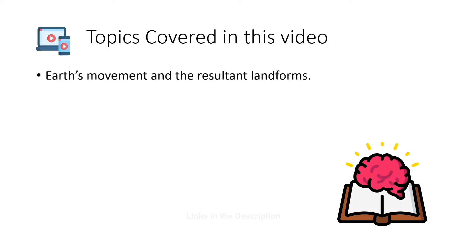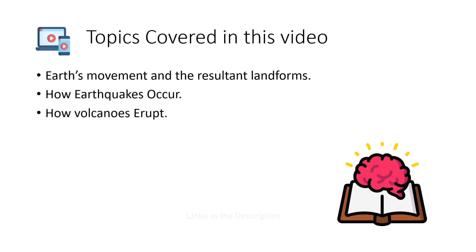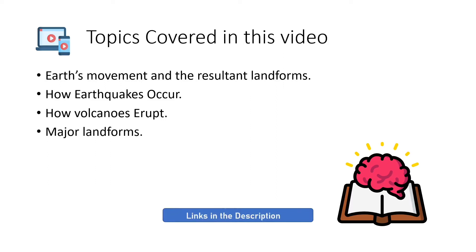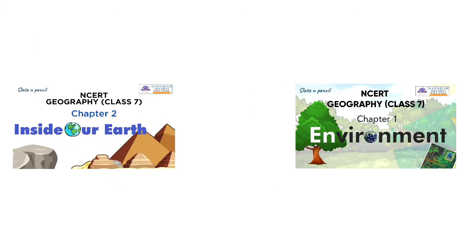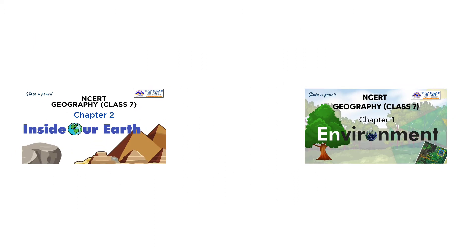Topics covered in this video will be Earth's movement and resultant landforms, how earthquakes occur, how volcanoes erupt, and major landforms. We have also discussed some chapters of Class 7 Geography — if you want to go to those videos, you can check the links in the description below.